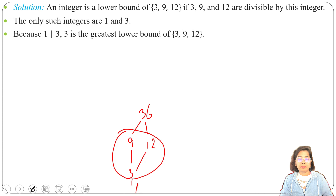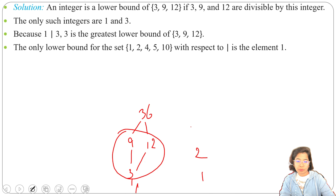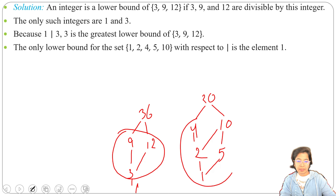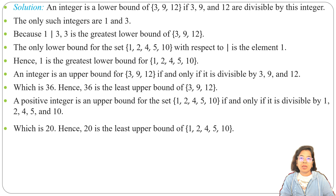For the subset {1, 2, 4, 5, 10}: 1 divides 2, 2 divides 4, 1 divides 5, 5 divides 10, and 2 divides 10. Adding element 20 — since both 4 and 10 divide 20 — the greatest lower bound of {1, 2, 4, 5, 10} is 1 and the least upper bound is 20. In today's lecture I discussed upper bound, lower bound, greatest lower bound, and least upper bound. In the next lecture I will discuss lattice. If this lecture is helpful, please like, share, and subscribe. Thank you.